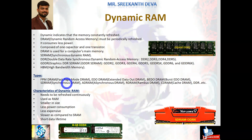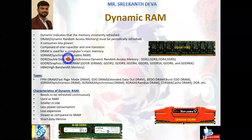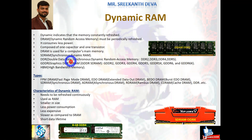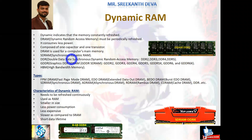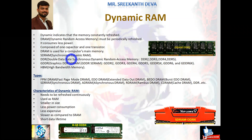DDR means Double Data Rate — the data is transferred twice during each clock cycle. In SDRAM, data is transferred once per cycle, but in DDR RAM, data is transferred twice: during the positive (rising) edge and the negative (falling) edge of the cycle. So it is known as Double Data Rate SDRAM. DDR RAM is further categorized into different types: DDR2, DDR3, DDR4, and DDR5 — all various versions available in the market.